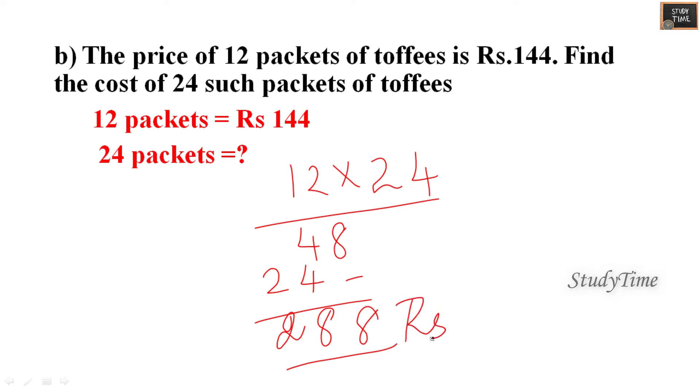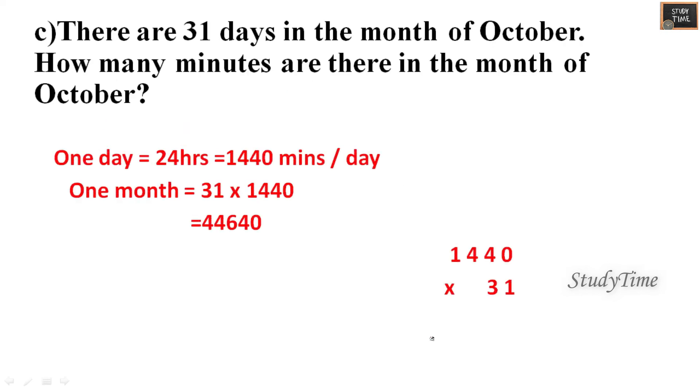There are 31 days in a month. How many minutes are there in the month of October? 31 into, for one day you will be having 1440 minutes. That is 24 into 60, each hour you will be having 60 minutes. So 24 into 60 you will be getting 1440, that you have to multiply with 31.